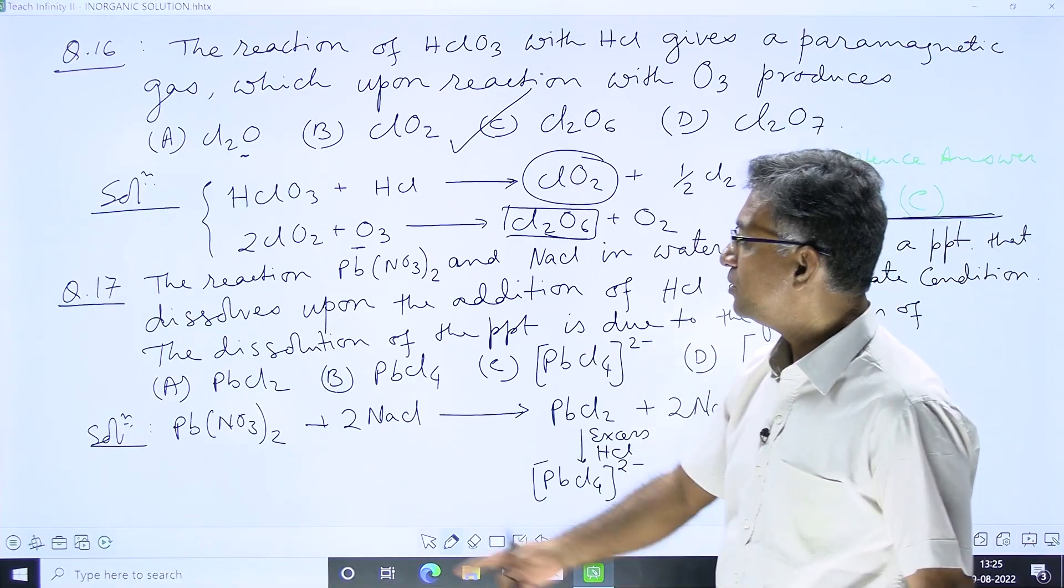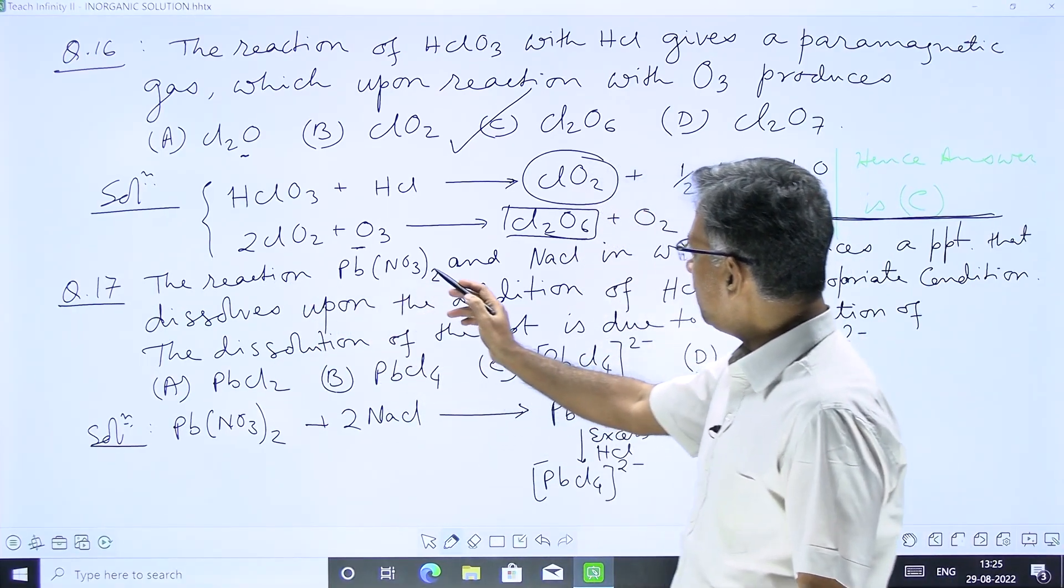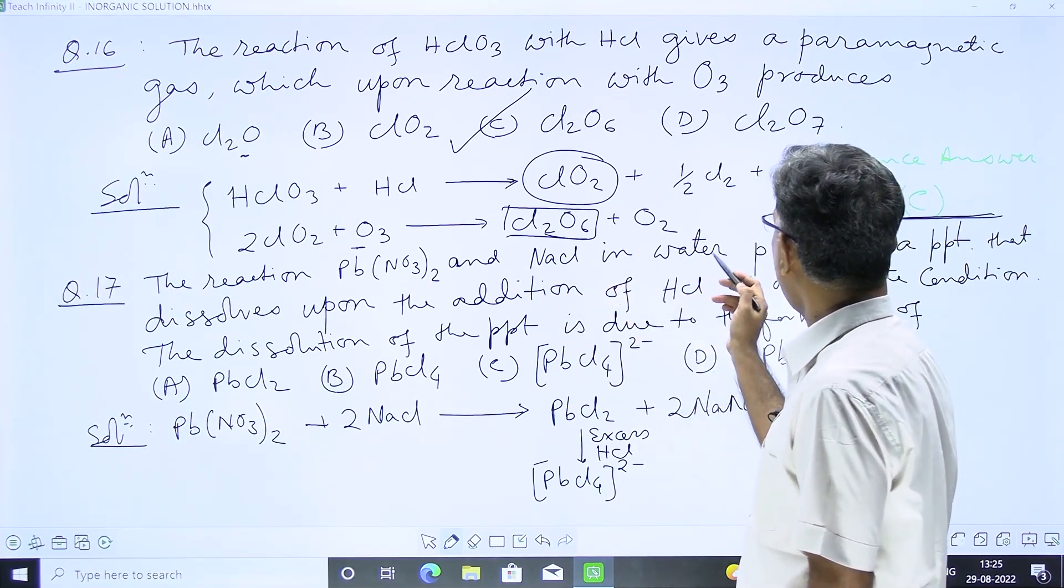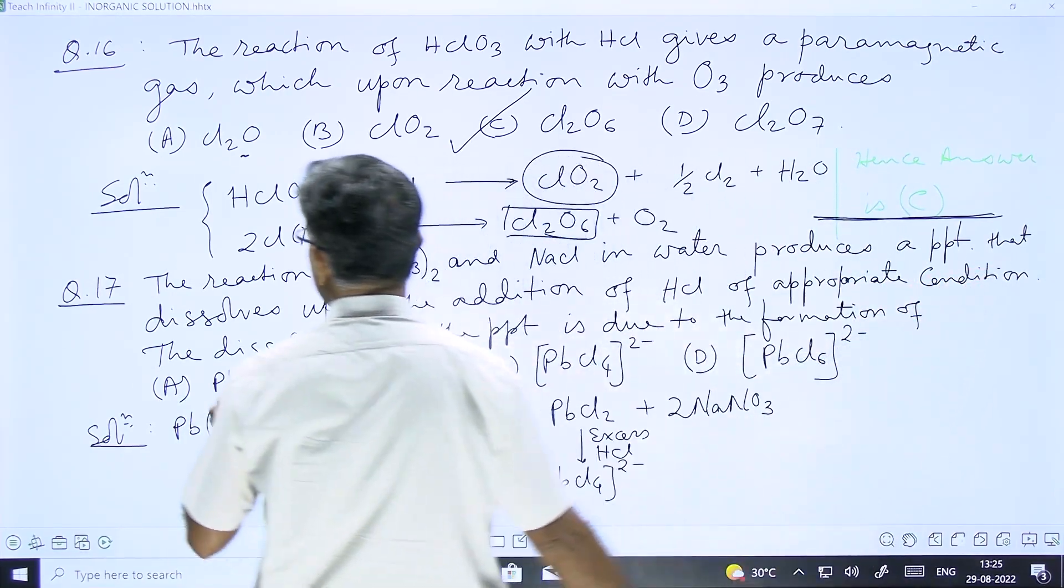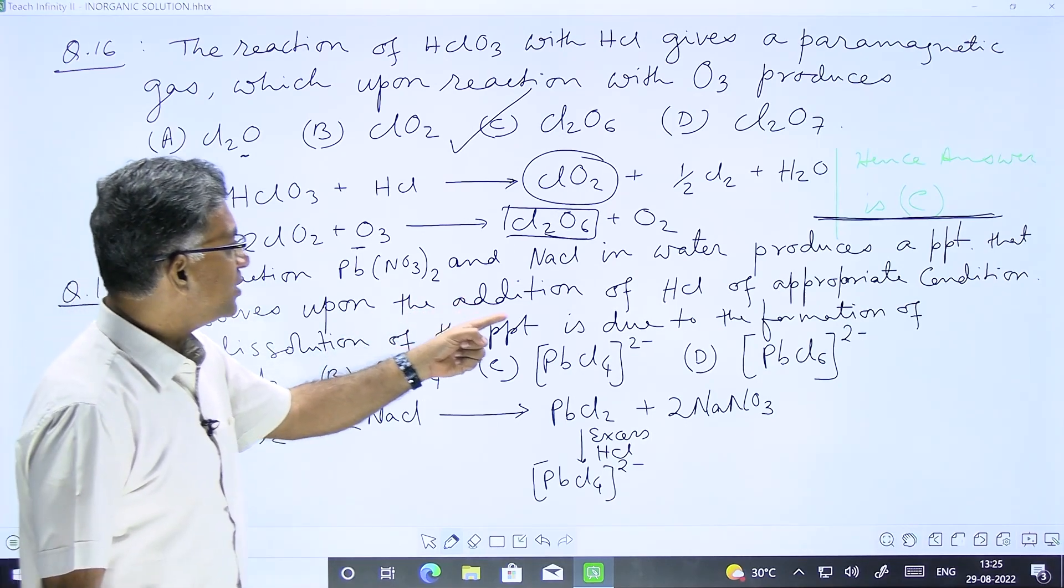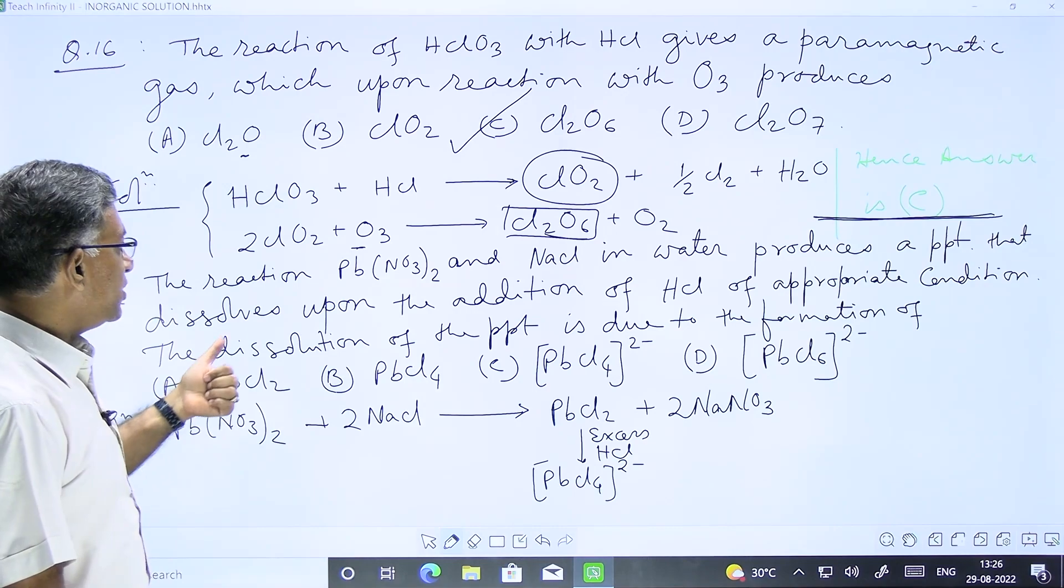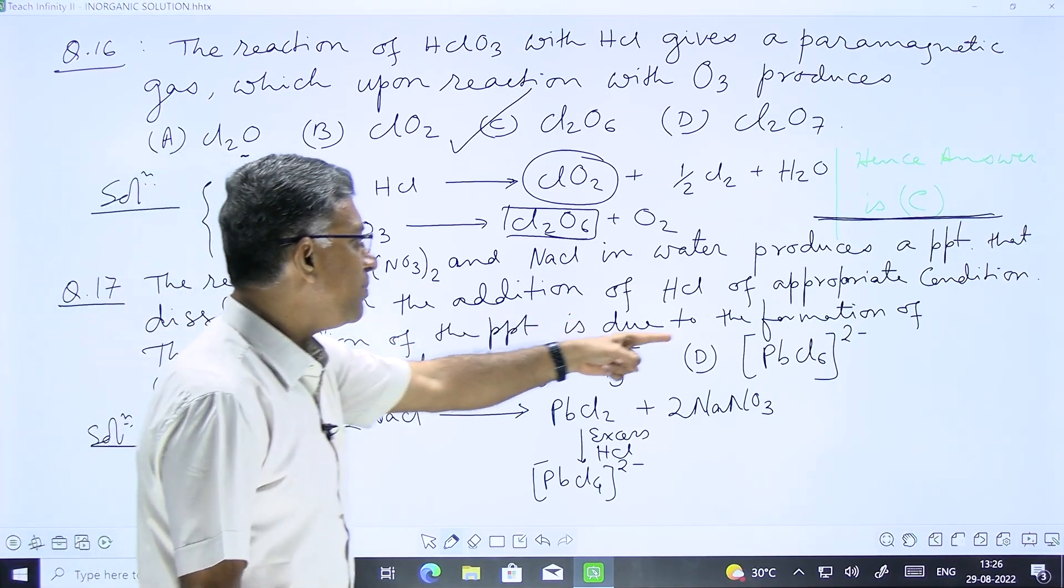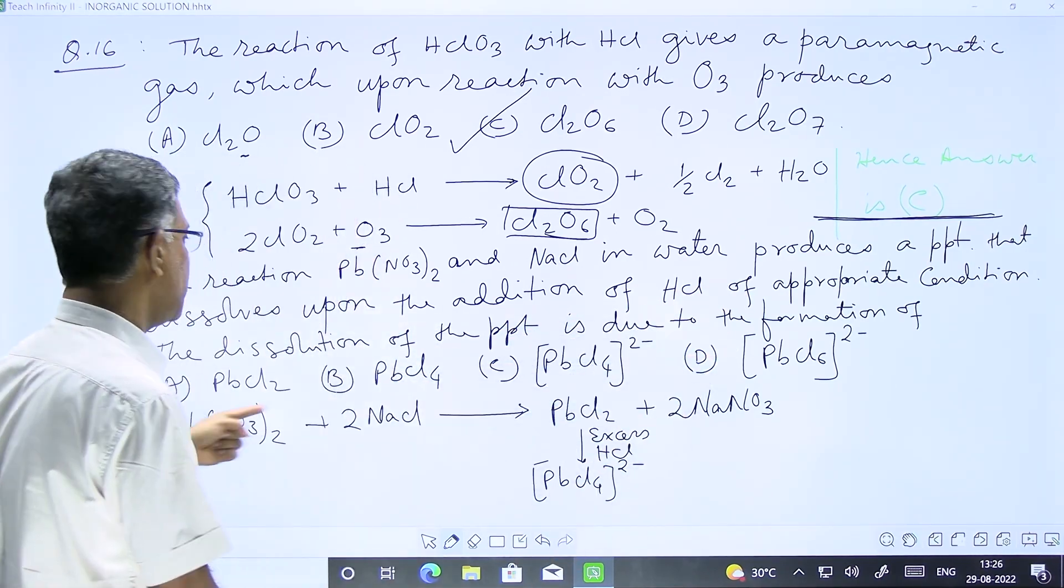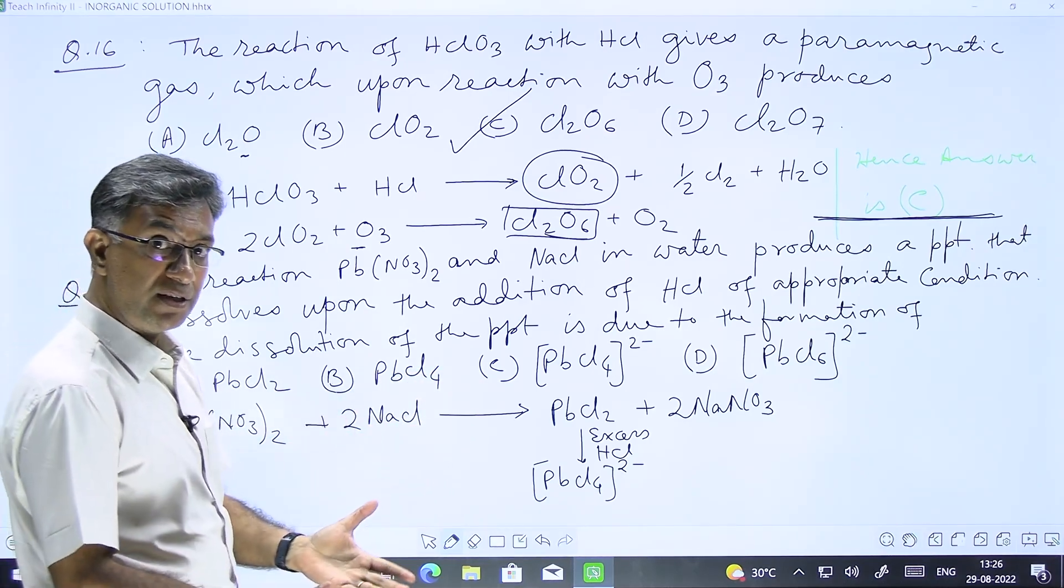Question number 17. The reaction of Pb(NO3)2 and NaCl in water produces a precipitate that dissolves upon the addition of HCl at appropriate conditions. The dissolution of the precipitate is due to the formation of option given here. It is based upon factual reactions.